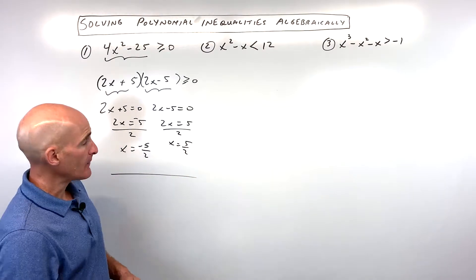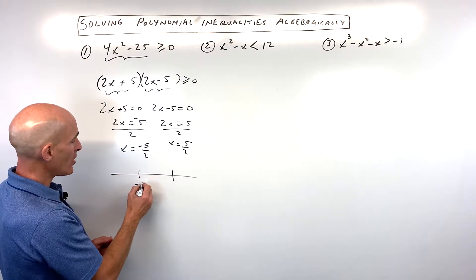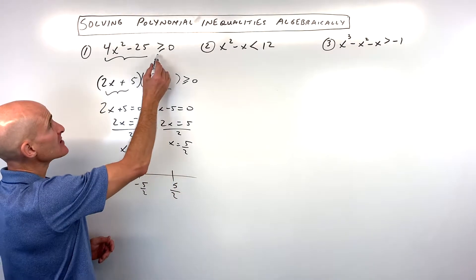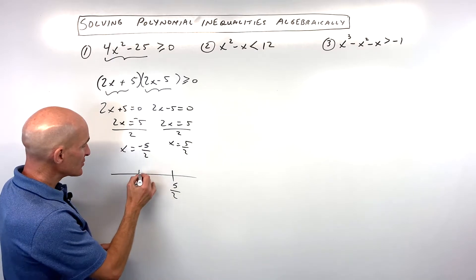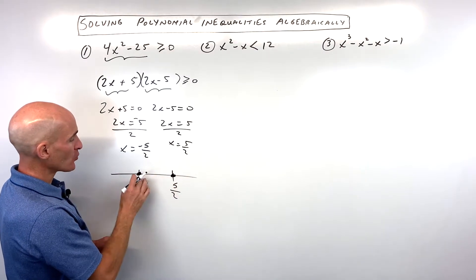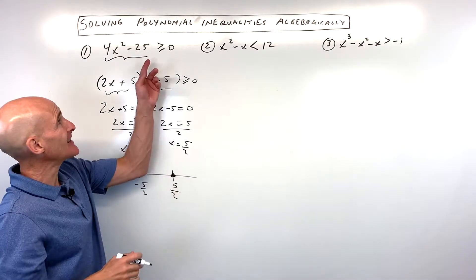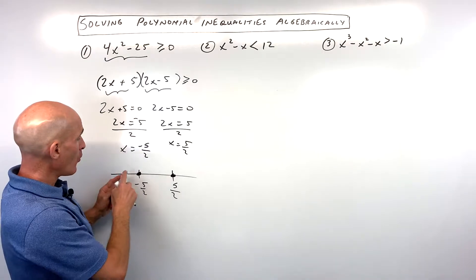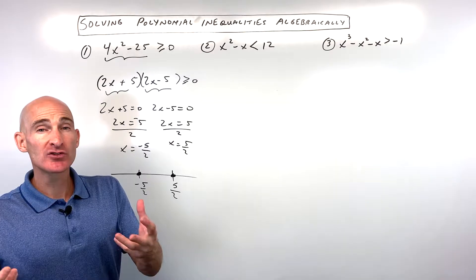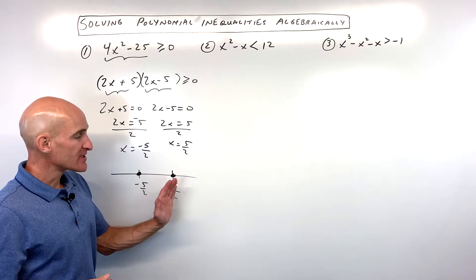Then what you want to do is go to the number line and plot these from lowest to highest — the smallest on the left and the larger one on the right. Because it's greater than or equal to zero, the 'equal to' means this is going to be a closed circle; it's going to include that point. So right at negative 5/2 or positive 5/2, that's going to make the left side equal to zero. But now we want to see what points make it greater than zero — greater than zero means making it positive — so we're going to do something called sign analysis.